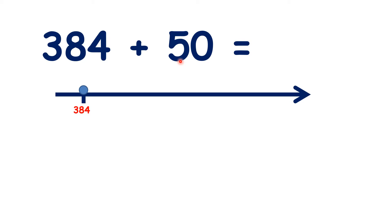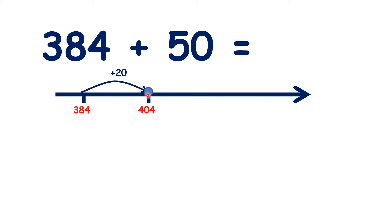Instead, we can solve this by bridging our tens. So if we add 20 — two of our tens — we get to 404. And if we know that 38 plus 2 is 40, we know that 384 plus 20 is 404. So because we're adding tens, the units' digit stays the same. But we've added 20, and we want to add 50, so let's add 30 more. That takes us to 434, because we know that 404 plus 30 is 434.